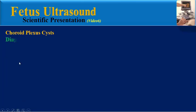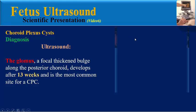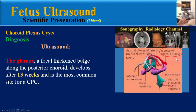For diagnosis, the most important modality is fetus ultrasound. The glomus is a focal thickened bulge along the posterior choroid that develops after 13 weeks and is the most common site for choroid plexus cysts. In this image we can see the lateral ventricles, 3rd ventricle, 4th ventricle, choroid plexus in lateral ventricles, 3rd and 4th ventricles, fornix, anterior commissure, and hippocampi.